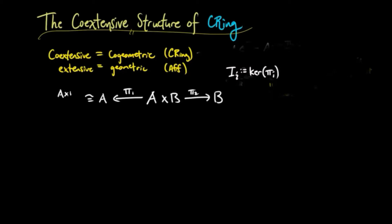And the quotient objects are given by A cross B over I1, which is isomorphic to A, and A cross B over I2, which is isomorphic to B.